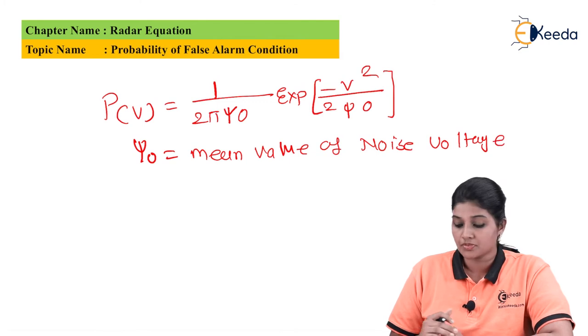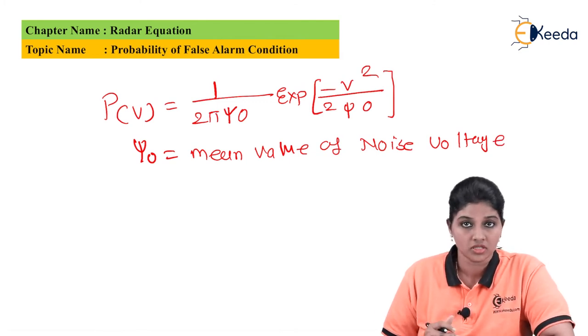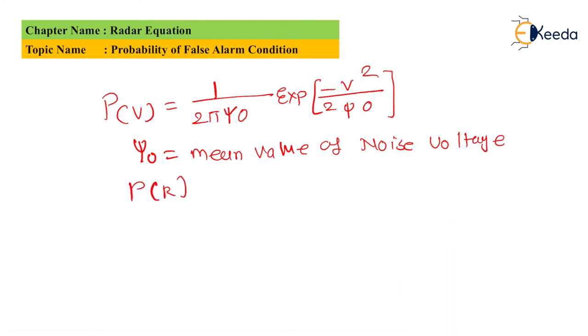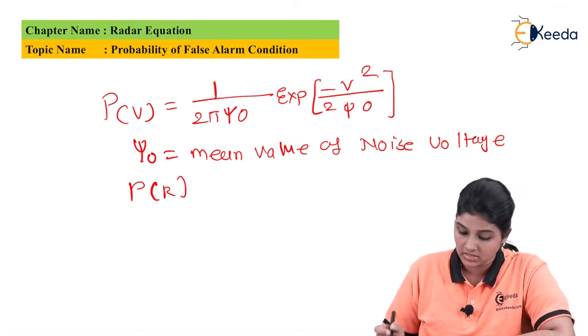When the Gaussian noise is passed through an IF filter, the PDF of envelope r is given as...